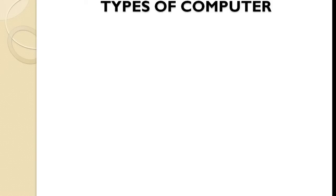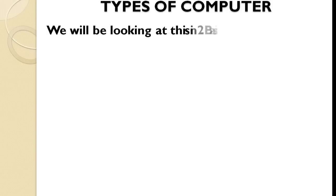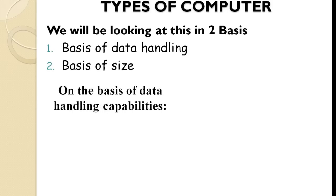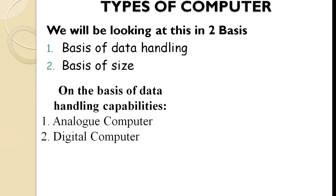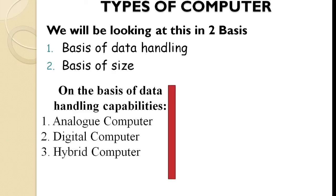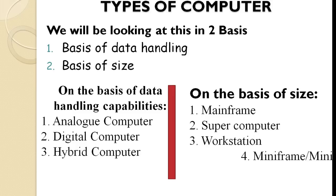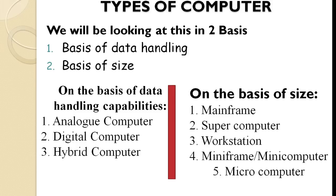Types of Computer — we will be looking at this on two bases: 1. Basis of data handling, and 2. Basis of size. On the basis of data handling capabilities, the computer is of three types: 1. Analog computer, 2. Digital computer, 3. Hybrid computer. On the basis of size: 1. Mainframe, 2. Super computer, 3. Workstation, 4. Mini frame or Mini computer, 5. Micro computer.